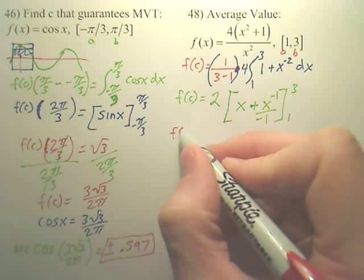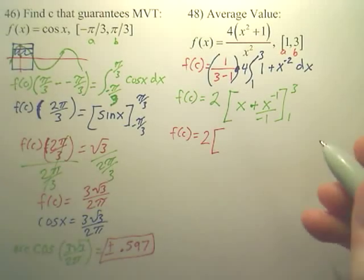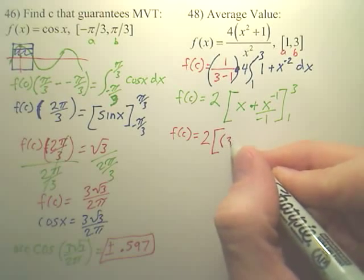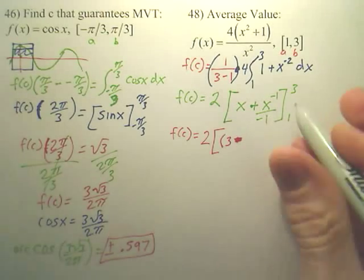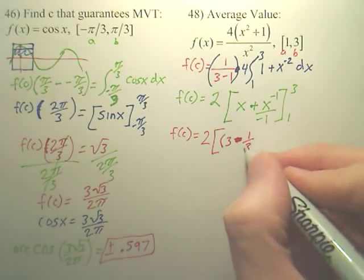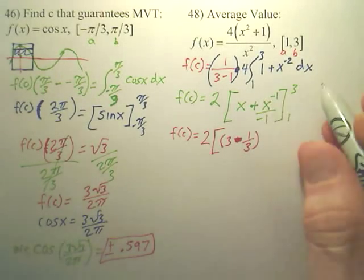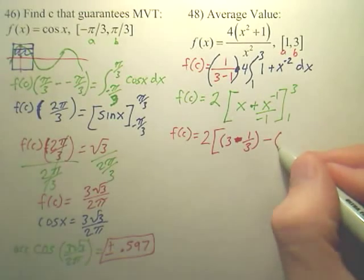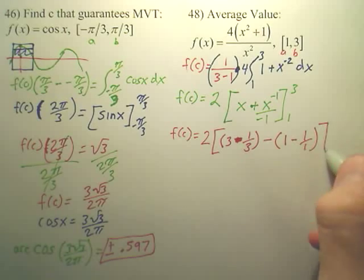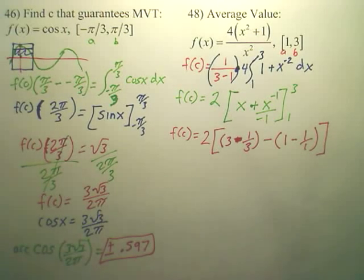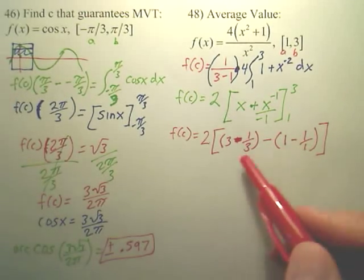So, my answer for f of c would be 2 out front. And then for the first interval, wouldn't it be 3 plus, oh, isn't it minus? Wouldn't that negative come on up? 1 over 3? Isn't this going to be 1 over x and a minus 1 over x? Minus, isn't this going to be 1 minus 1 over 1? Remember, this is 1 over x and it's minus because it's negative. Plug in 3, plug in 1, subtract the 2.